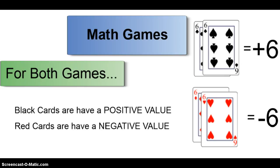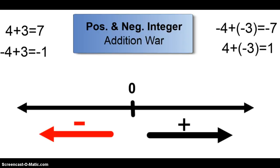For both games, because we're trying to target the skill of working with positive and negative integers, all black cards are going to have a positive value where either of these sixes would be a plus six, and all red cards have a negative value so the six of diamonds and the six of hearts would each be worth negative six.